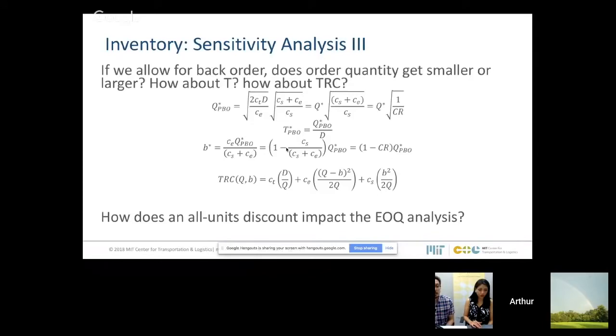The question here is, if we allow for back order, does the order quantity get smaller or larger? What about T? What about total relevant cost?